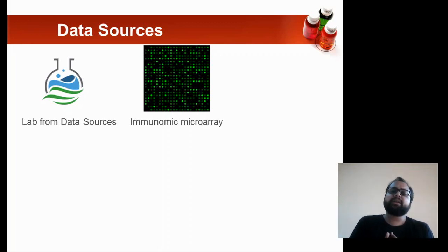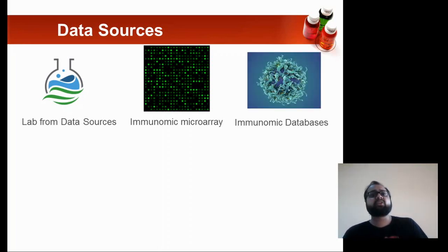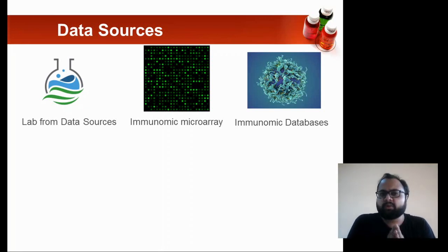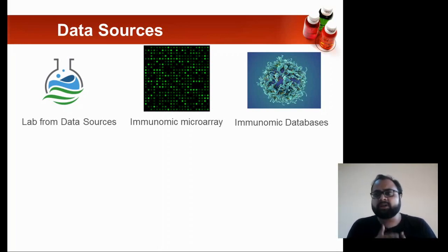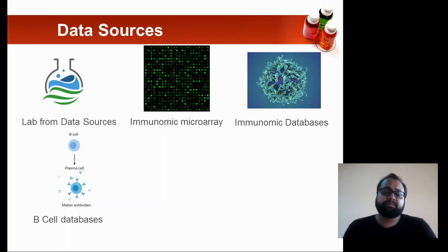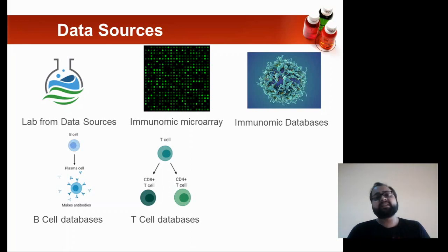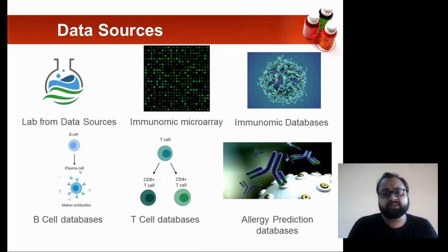Immunomic microarray technology deals with the expression of antibodies or antigens. Immunomic databases cover immunology-related data including antigens, antibodies, and epitopes. There are also B cell databases containing information and tools for predicting B cells, T cell databases, and allergy prediction databases.